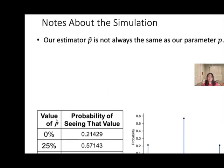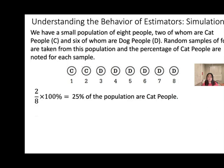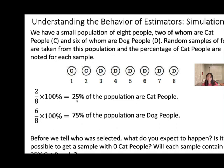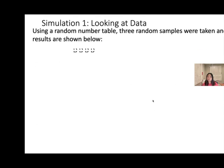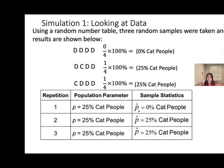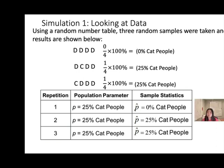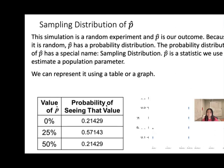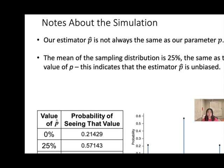Our estimator P-hat is not always the same as our parameter. The sample proportion is not always equal to the population proportion. The population parameter — the population proportion — is 25% cat people. When we perform the experiment, we can have a chance that the sample proportion is 0%, which is not equal to the population proportion. The mean of the sampling distribution is 25%, the same as the value of P. This indicates that the estimator P-hat is unbiased.